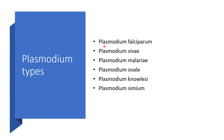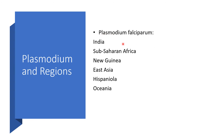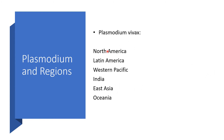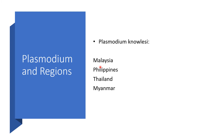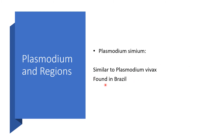Types of Plasmodium: Plasmodium could be falciparum, vivax, malariae, ovale, knowlesi, or simium. Plasmodium falciparum is mostly found in India, Sub-Saharan Africa, New Guinea, East Asia, Hispaniola, and Oceania. Plasmodium vivax is found in North America, Latin America, Western Pacific, India, East Asia, and Oceania. Plasmodium malariae is not so common, but when found, it will be found in Sub-Saharan Africa. Plasmodium ovale is relatively uncommon, found only in Africa. Plasmodium knowlesi is found in Malaysia, Philippines, Thailand, and Myanmar. Plasmodium simium is similar to Plasmodium vivax and is found in Brazil.